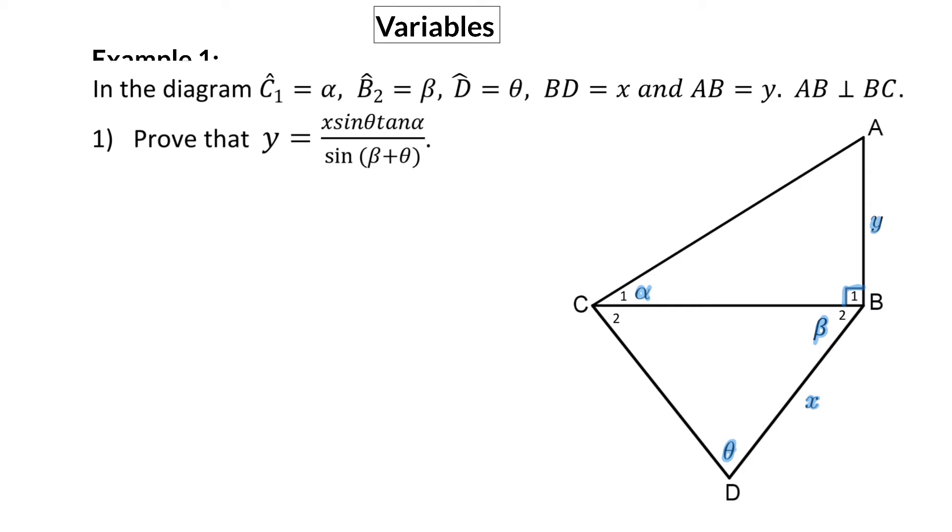In lesson 4, I mentioned that it's always good to start in the triangle where you have a side length and then work your way to the triangle where there's a dimension you need to calculate. Especially when variables are given, I will add a step and say start by determining all the possible angle sizes. Because here we only have variables, all our angle sizes will be abstract values.